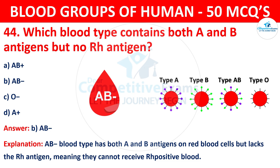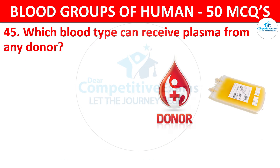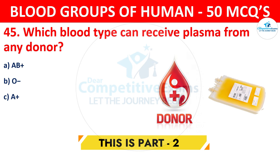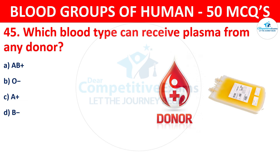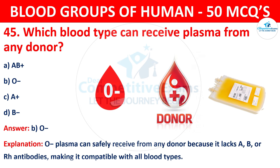Question 45: Which blood type can receive plasma from any donor? The correct answer is B, O negative. O negative plasma can safely be received from any donor because it lacks A, B, or RH antibodies, making it compatible with all blood types.